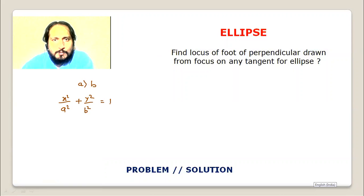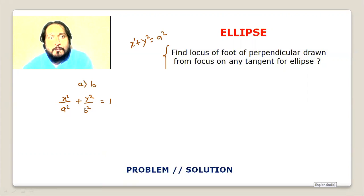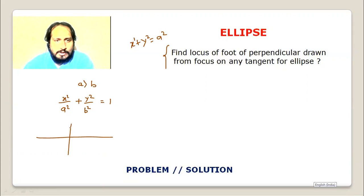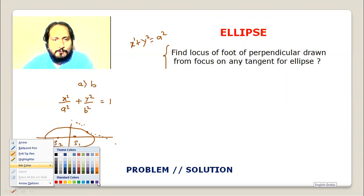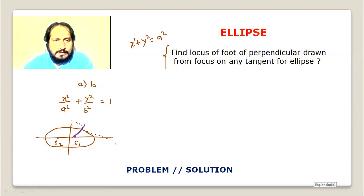Now focus on how to prove it. The auxiliary circle is x squared plus y squared equals a squared. We have the ellipse, with foci S1 and S2. We need to find the locus of the foot of perpendicular drawn from one focus — say S1 — onto a tangent line to the ellipse.